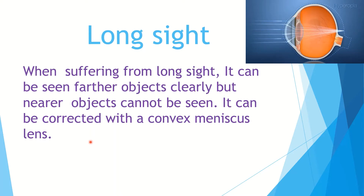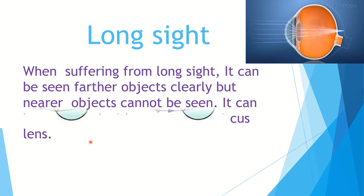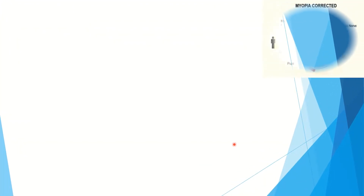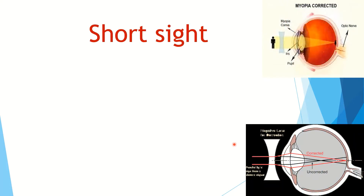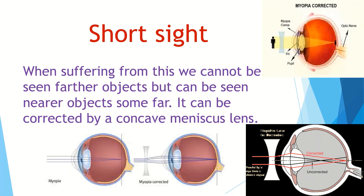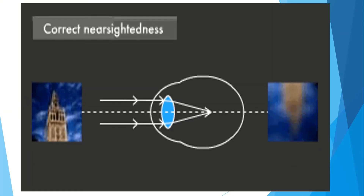Long-sightedness can be corrected with a convex lens. Short-sightedness — when suffering from this condition, we cannot see farther objects but can see nearer objects. It can be corrected by a concave lens. You can see in this picture how to correct these two vision defects with the appropriate lenses.